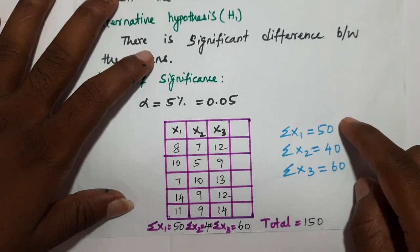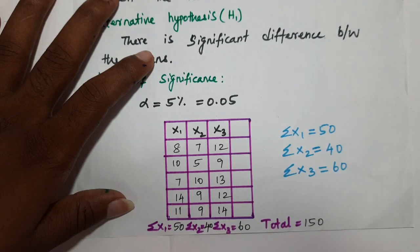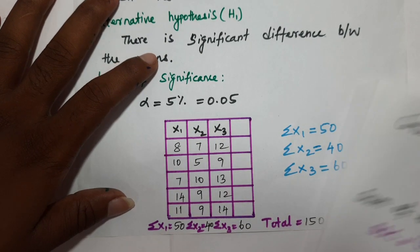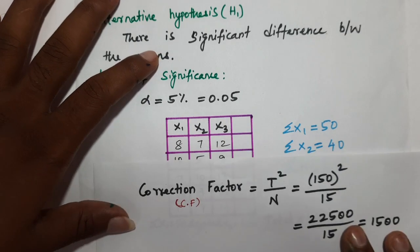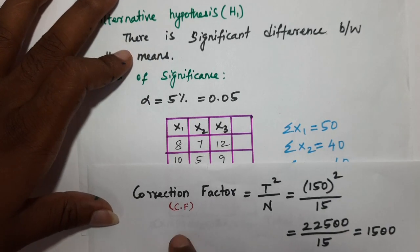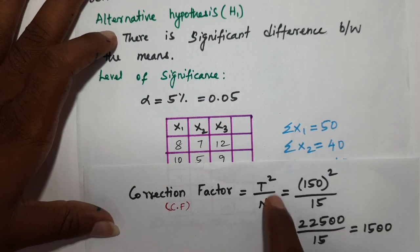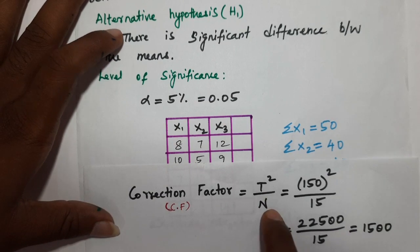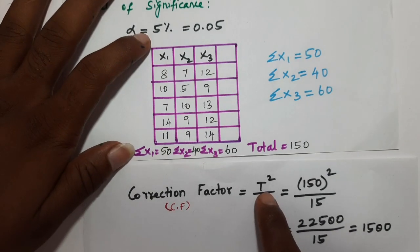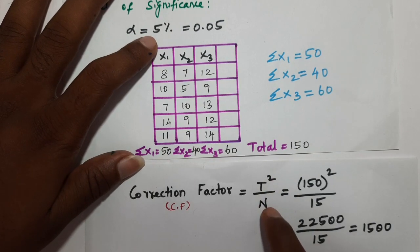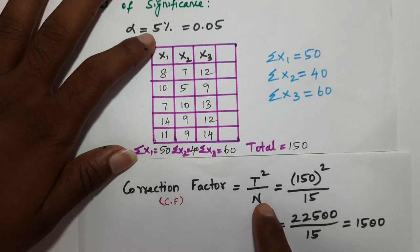From the values of x1, x2, x3, the first step is to find the Correction Factor (CF). The correction factor formula is CF = T squared divided by N, where T is the grand total.